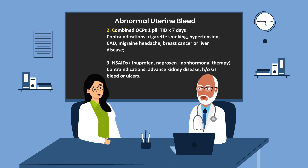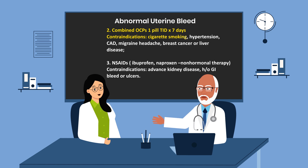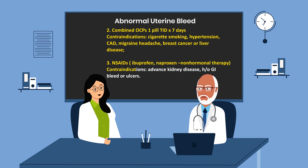You could also discharge the patient with a combination of progestin and estrogen — one pill three times a day for seven days. Contraindications for combination hormone therapy include cigarette smoking, hypertension, coronary artery disease, migraine headache, breast cancer, or liver disease. NSAIDs have also been proven as a treatment for abnormal uterine bleeding; either ibuprofen or naproxen may be used as non-hormonal therapy. Contraindications include advanced kidney disease and a history of bleeding or ulcers.